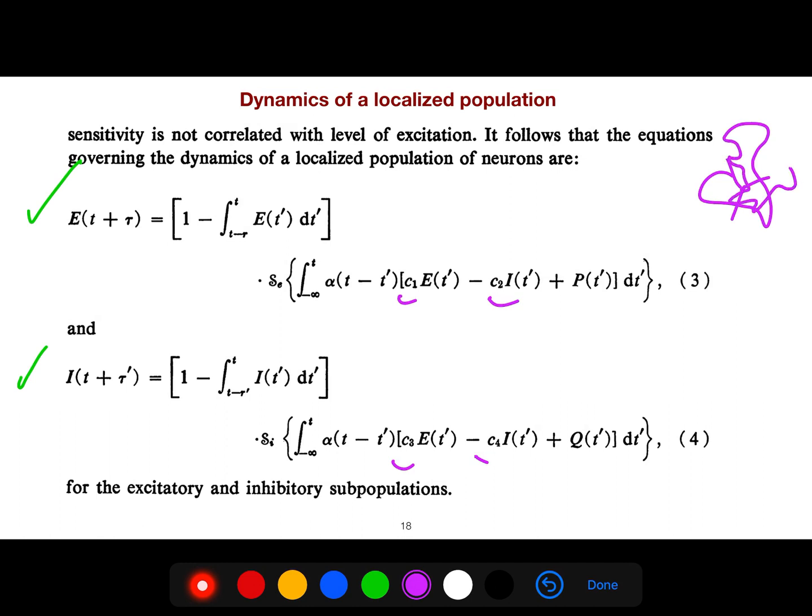Everything depends, for example, if you have x dot equal to f of x, this is a dynamical system. f could be a vector, a vector field. Then if f of x is equal to 0, you get all the fixed points. Your fixed points depend on some parameters.